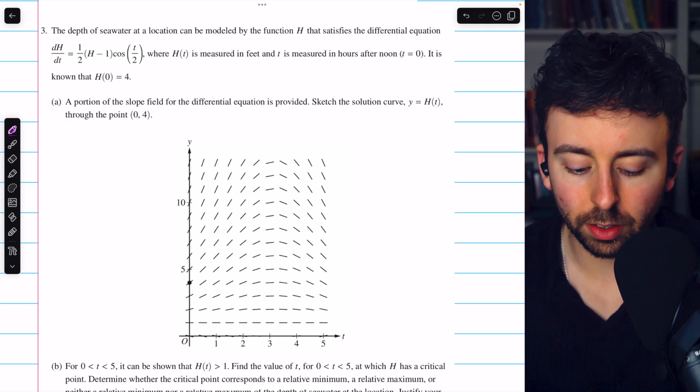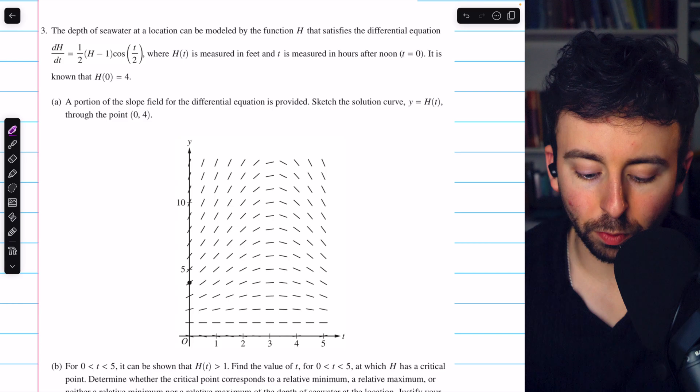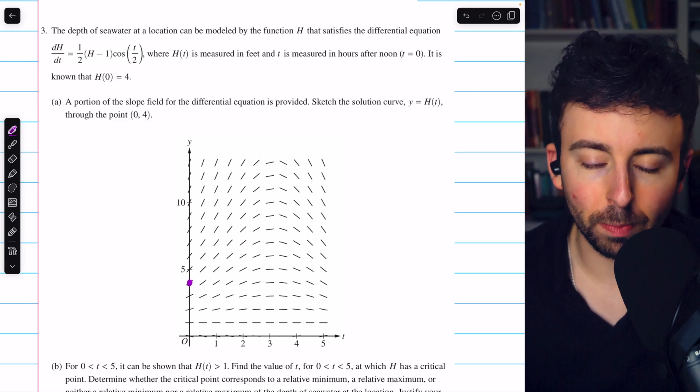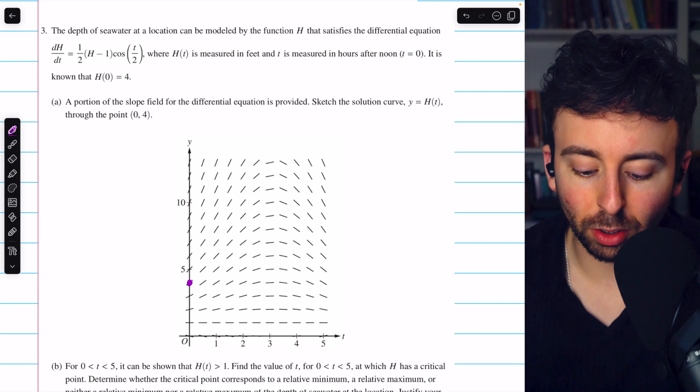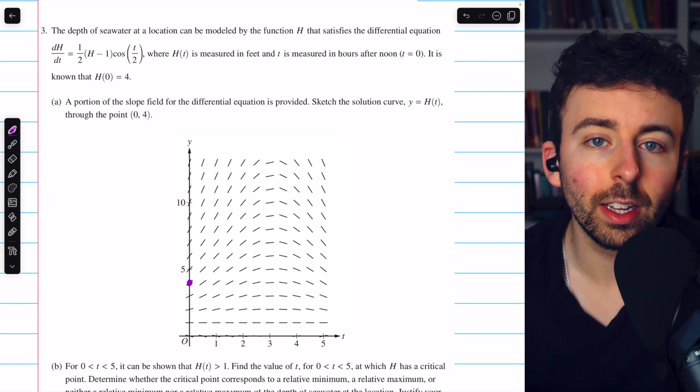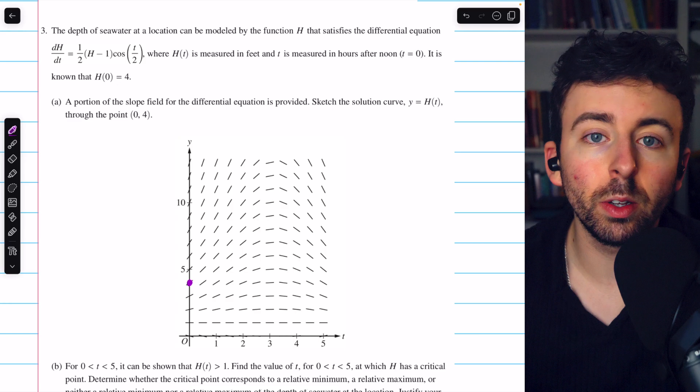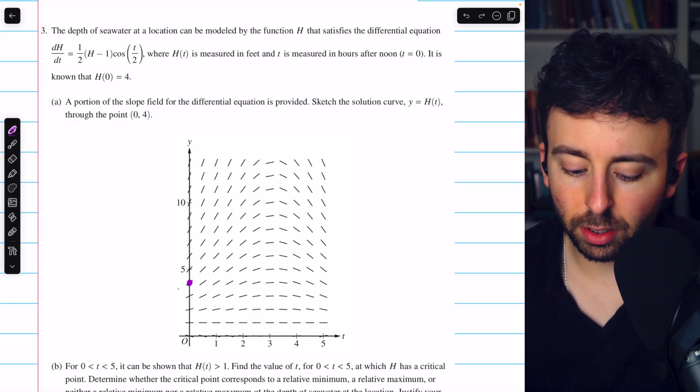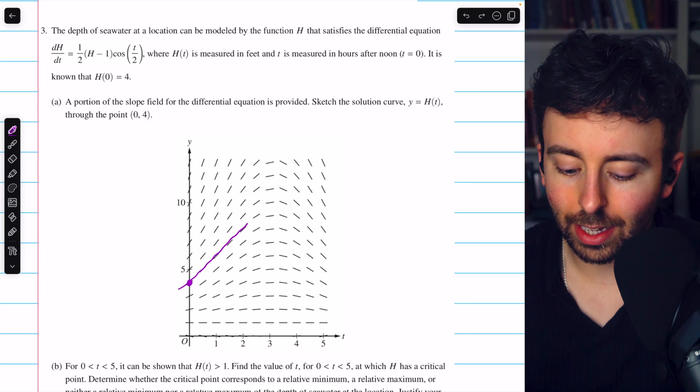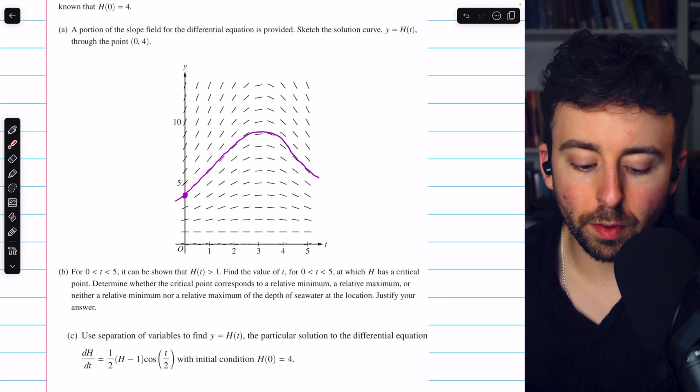Down here on the slope field, we will plot the point at (0,4). Actually, it's already plotted there for us, so that's great. Now we just have to sketch the solution curve passing through this point. Sketch a curve through the point that follows the directions as indicated by the slope field. The solution curve should look something like that.